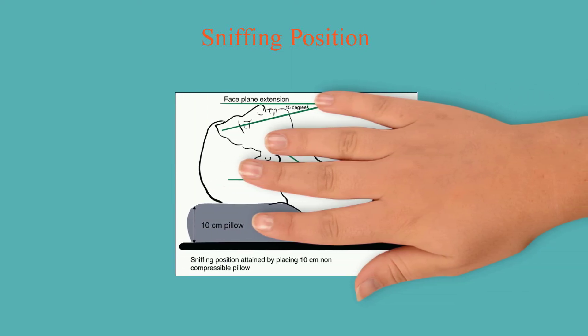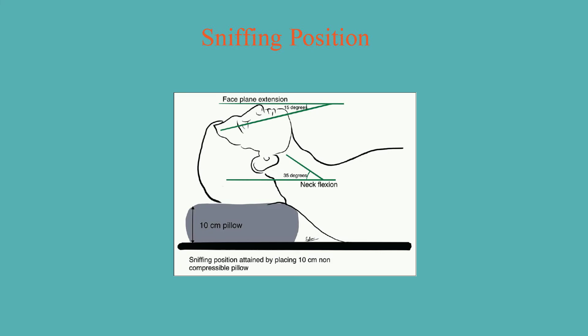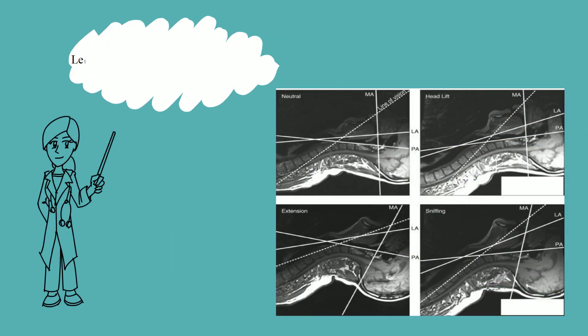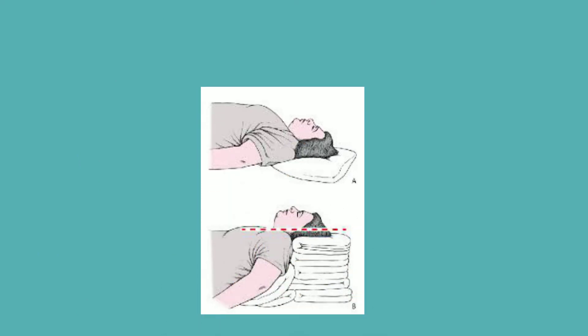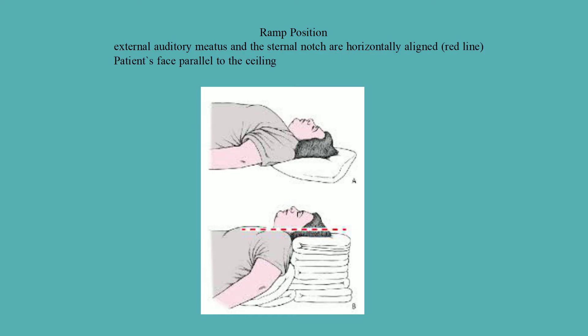Make sure your patient is in a sniffing position if possible. You can achieve that using a 10 cm non-compressible pillow, 35 degrees of neck flexion, and 15 degrees of face plane extension. This MRI image compares sniffing to neutral, head tilt, and extension positions — sniffing keeps the laryngeal axis close to the vision line. Note the oropharyngeal curve angle. Ramp position is preferred in morbidly obese patients, with the patient's face parallel to the ceiling and the external auditory meatus and sternal notch horizontally aligned.